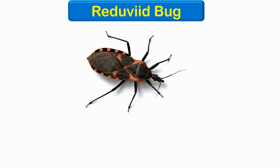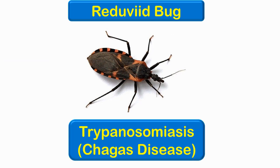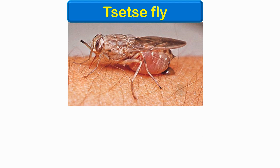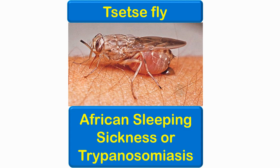This picture shows a reduviid bug, which is responsible for the transmission of trypanosomiasis, or Chagas disease. This is a picture of the tsetse fly, which transmits African sleeping sickness, also called trypanosomiasis.